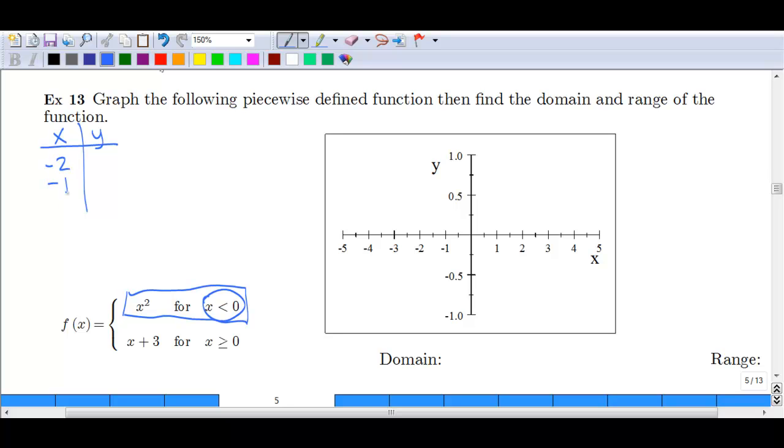Let's just pick a few points. We'll say negative 2, negative 1, and 0 just so we can get at least that part of the parabola. If you plug in negative 2, you get 4. If you plug in negative 1, you get 1. If you plug in 0, you get 0. And again, here we are going to have an open dot.